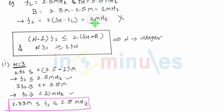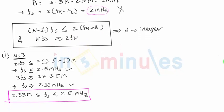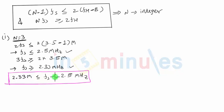Any valid value of fs that can be available from this generalized sampling theorem has to be greater than 2 megahertz. First example is 2.33 megahertz to 2.5 megahertz.